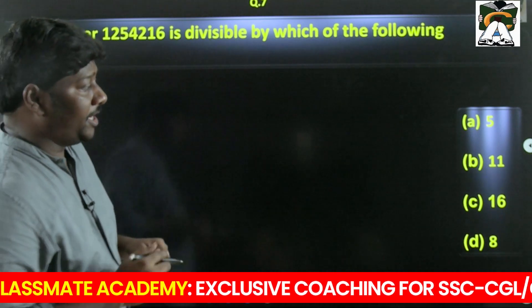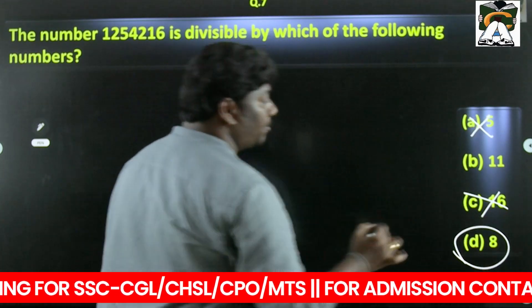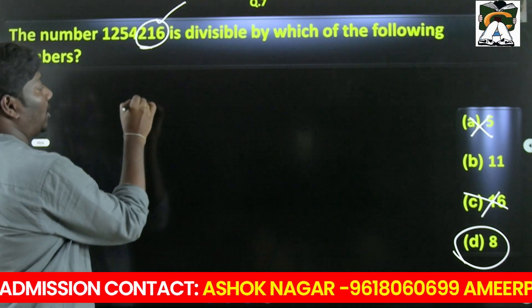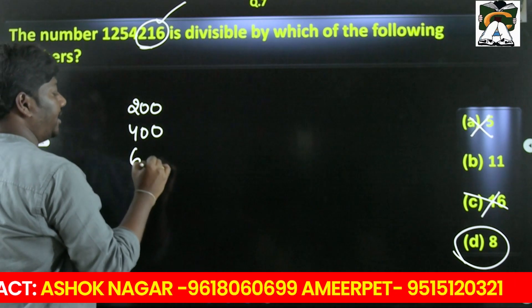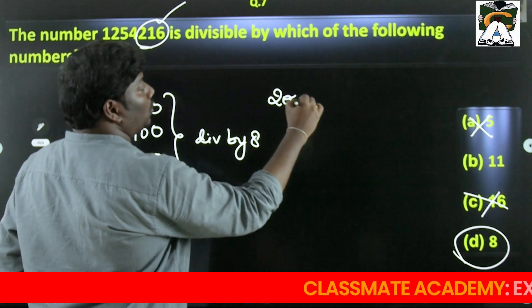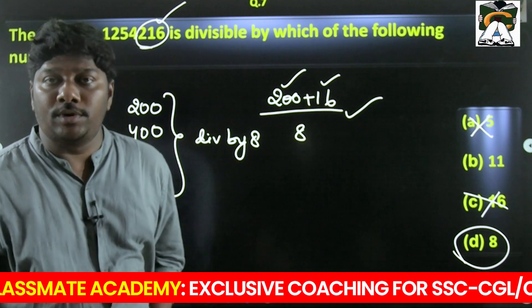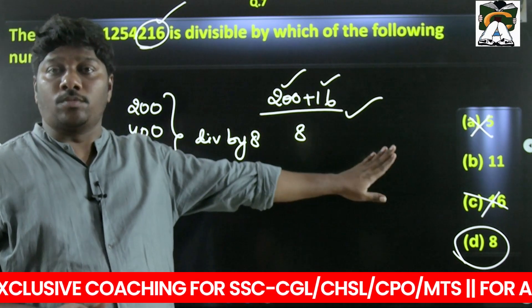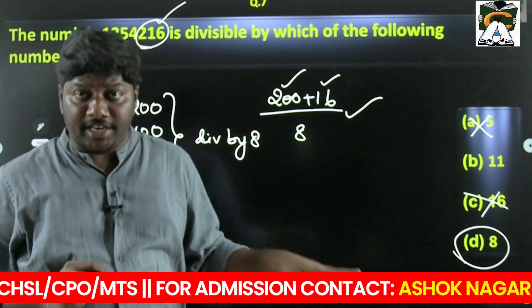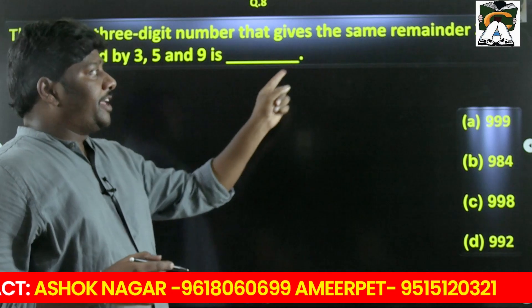Another divisibility question: if 8 is in the options alongside 16, you cannot have both as answers. Check divisibility by 5 first — last digit rules it out. For divisibility by 8, check the last three digits: 216. We know 200 is divisible by 8 and 16 is divisible by 8, so the whole number is divisible by 8. No need to also check for 11 — that wastes time in the exam.